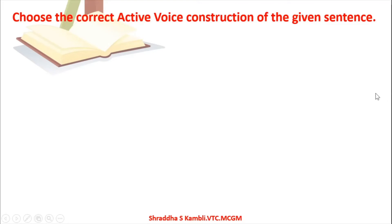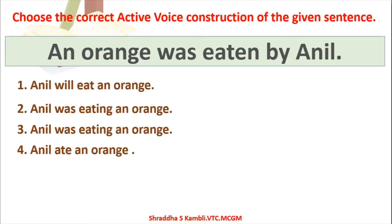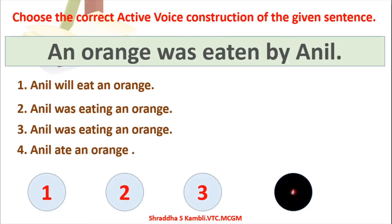Next question: 'An orange was eaten by Anil.' Pay attention to the tense — 'was eaten' is past tense. The options are: (1) Anil will eat an orange, (2) Anil was eating an orange, (3) Anil was eating an orange, (4) Anil ate an orange. The correct answer is 'Anil ate an orange' — the simple past active form matching the past tense of the passive sentence.